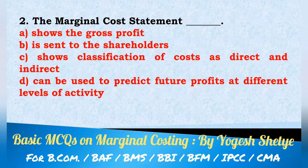Second question: what does a marginal cost statement show? Options: shows the gross profit; sent to the shareholders; shows classification of cost as direct and indirect; can be used to predict future profit at different levels of activity. Answer: marginal cost statement can be used to predict future profit at different levels of activity.